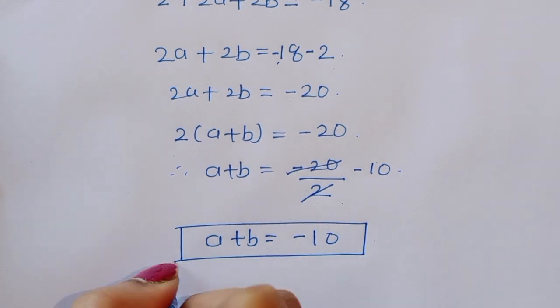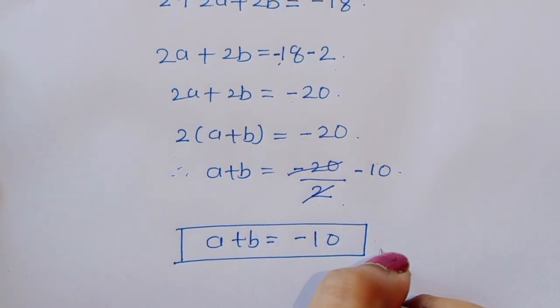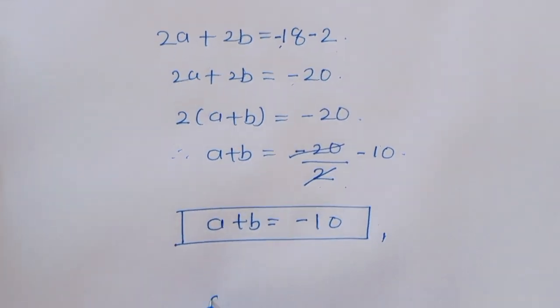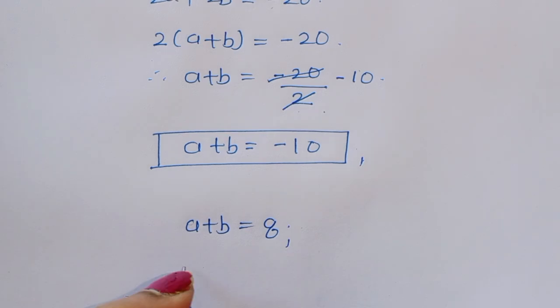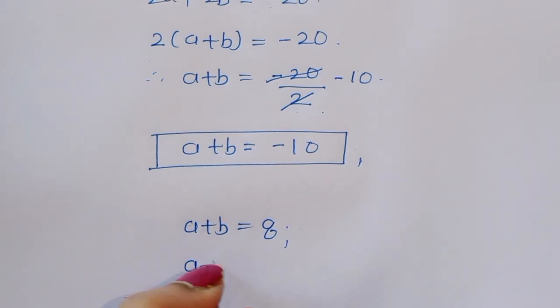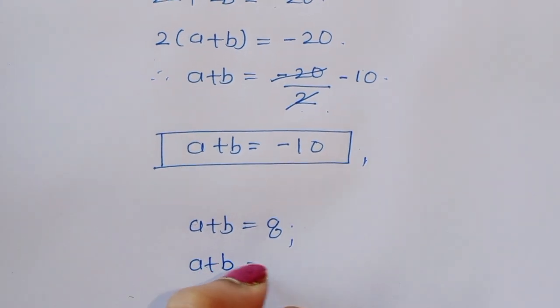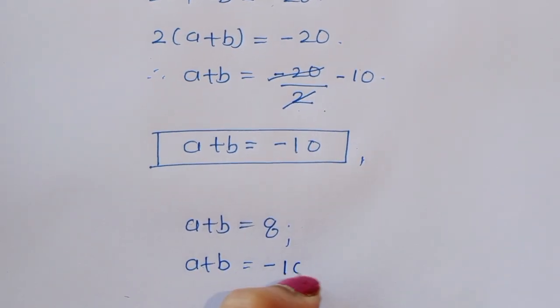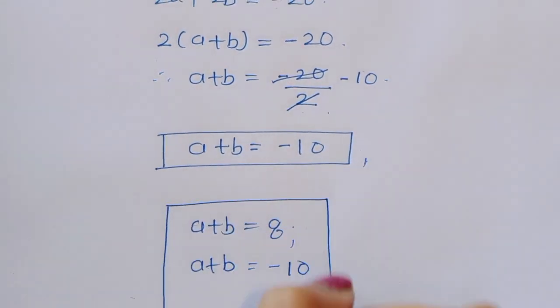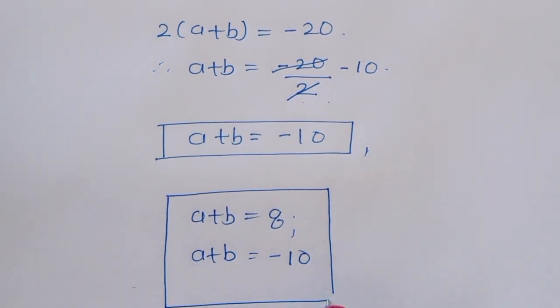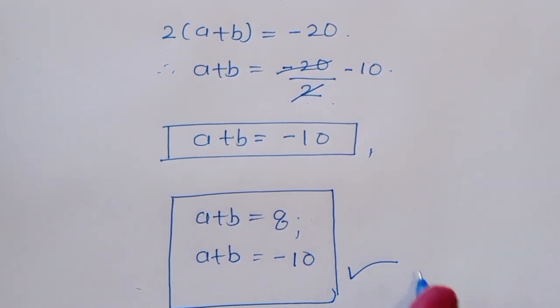So we got two values: the first one is a plus b is equal to 8, and the next one is a plus b is equal to minus 10. This is the solution. Thank you.